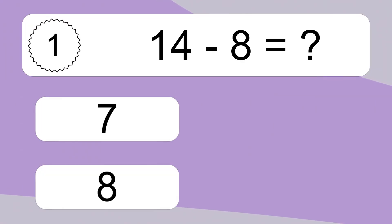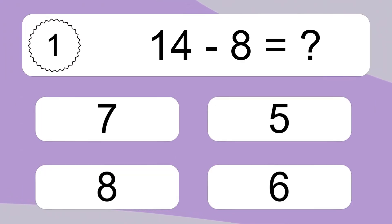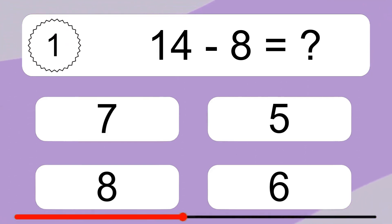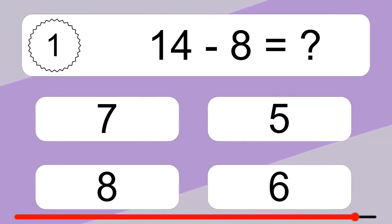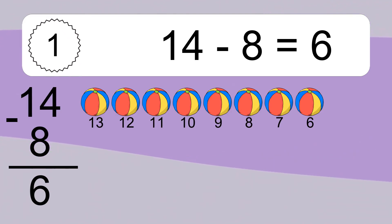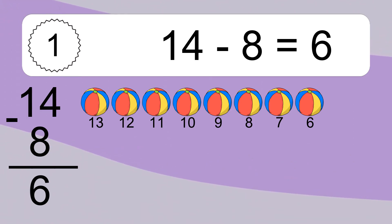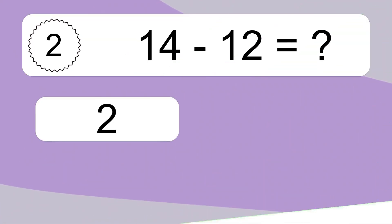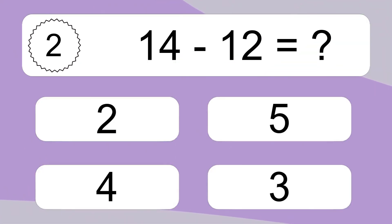14 minus 8 equals what? 14 minus 8 equals 6. Let's count it: 13, 12, 11, 10, 9, 8, 7, 6.